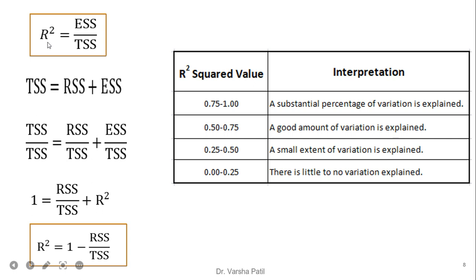R-square is nothing but whatever is explained by the variable. Here, we are taking ESS divided by TSS — that is, explained by the regression divided by total sum of squares. Explained by the regression is ESS, and total sum of squares is TSS, that is from the actual value and the average value.